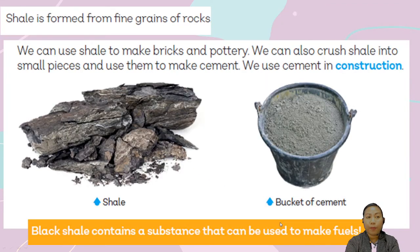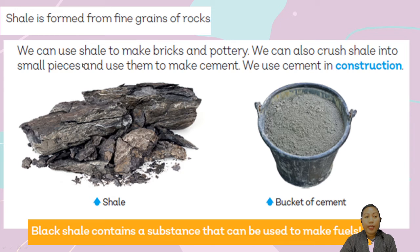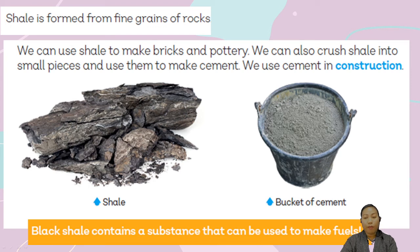Here is an example of a sedimentary rock: shale. Shale is formed from fine grains of rocks. We can use shale to make bricks and pottery. We can also crush shale into small pieces and use them to make cement. We use cement in the construction of houses, buildings, or roads. A black shale contains a substance that can also be used to make fuel.